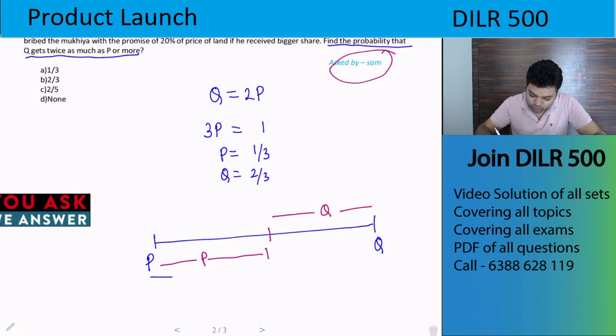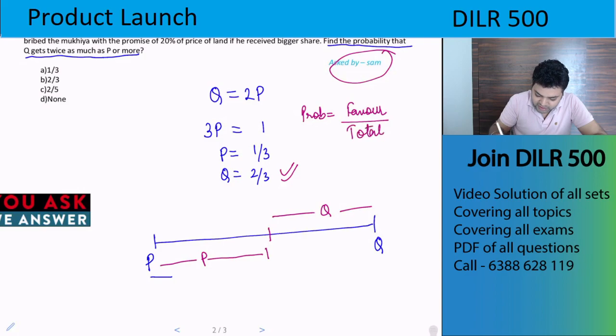Now it says Q's value should be 2/3. Let's understand what probability is - probability is favorable cases upon total cases.